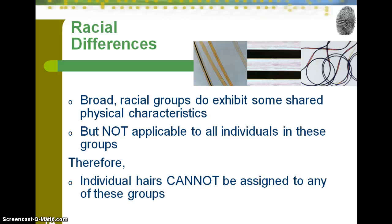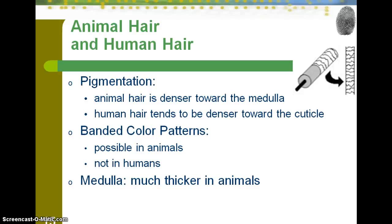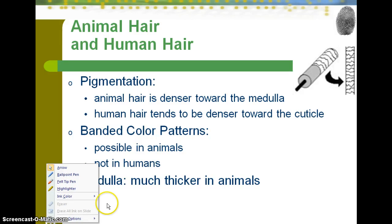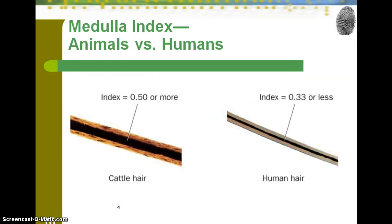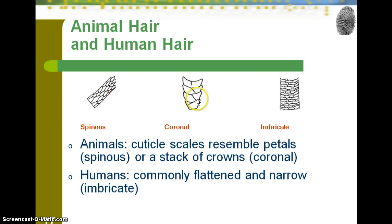This also goes back to the differences among ethnicities. When comparing animal hair and human hair, animal hair will generally have a much thicker medulla. There is something called the medullary index, which is a measurement based on the thickness of the medulla. You can see the varying medullary indexes here — cattle hair has one of the thickest, while human hair generally has an index of 0.33 or less. There is also a difference in cuticle type: humans tend to have the imbricate cuticle, while animals can have spinous or coronal cuticles.